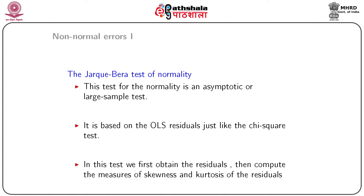The next test is the Jarque-Bera test of normality. This test assumes asymptotic or large samples — specifically, sample size greater than or equal to 30. Like the chi-square test, it is based on residuals from the ordinary least square estimates. After obtaining the residuals, instead of computing standard errors, we compute the measures of skewness and kurtosis of the residuals.